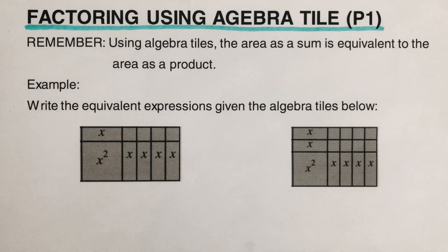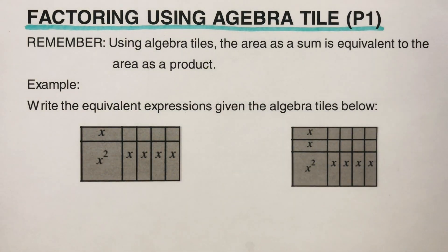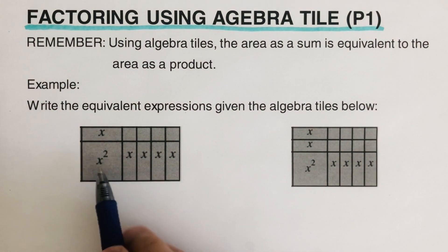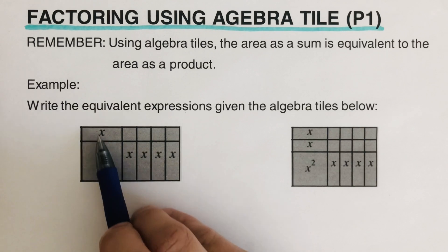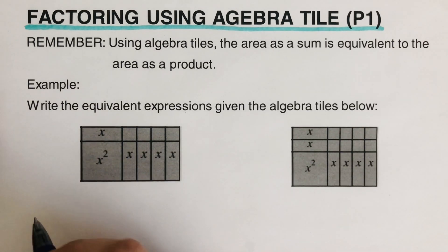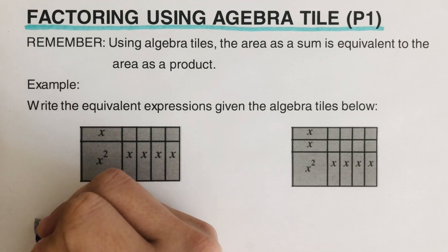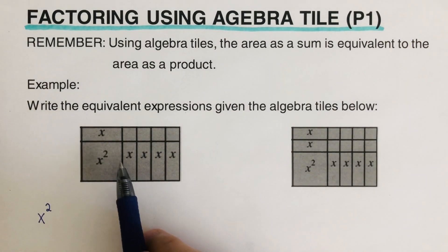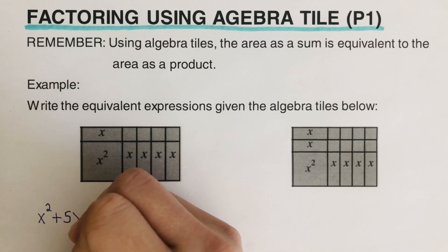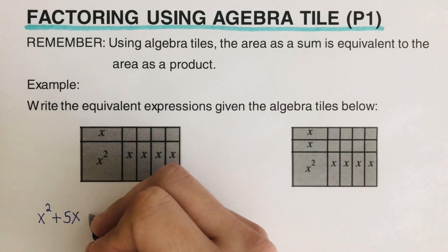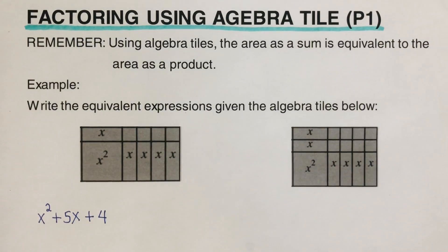Let's jump into the first example to better understand how to factor using algebra tiles. We're given a tile and the first step is to write the area as a sum. There is another video that talks about how to get the area as a sum. So: there's one x squared, and then I count the x's — one, two, three, four, five — so that's five x's, and then one, two, three, four — there are four ones.